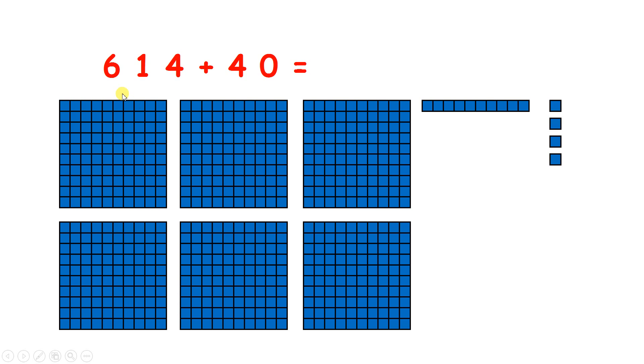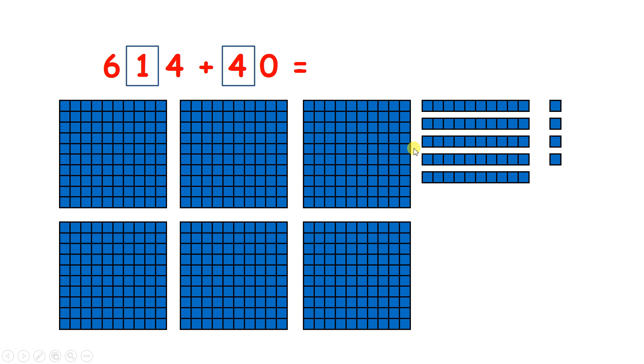Now, what is 614 plus 40? Well, we have one ten and we're adding four tens, so if we add one, two, three, four tens, we now have 654, because one plus four is five. Thank you.